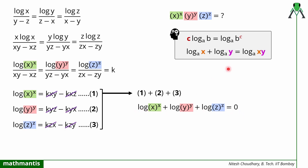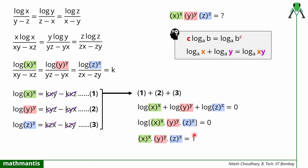Since log x plus log y equals log of xy, I can write the left side as log of (x raised to power x, multiplied by y raised to power y, multiplied by z raised to power z). This equals zero. We know that log of one is zero, so this product must equal one. That is the answer — very simple — the answer is one.